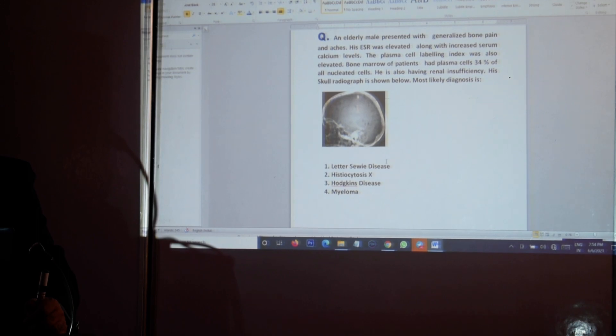An elderly male presented with generalized bone pains and aches. ESR elevated. Increased serum calcium level. Plasma cell labeling index also elevated. Plasma cells 34% of all nucleated cells having renal insufficiency. Skull radiograph is shown. Pretty simple question, too many clues here. I would not expect a standard examiner to give you so many clues. What comes to my mind is a plasma cell dyscrasia, multiple myeloma. You must be well aware about the theory of multiple myeloma.